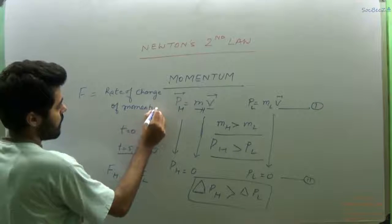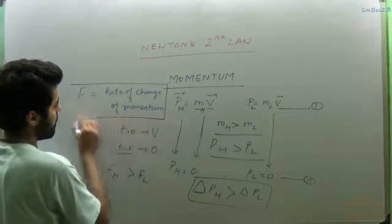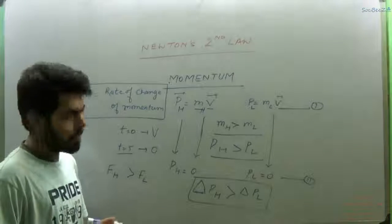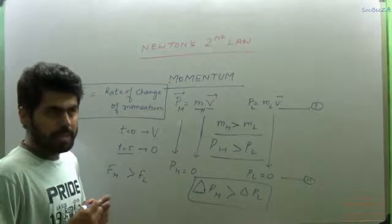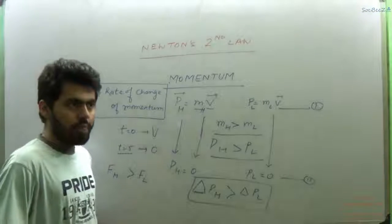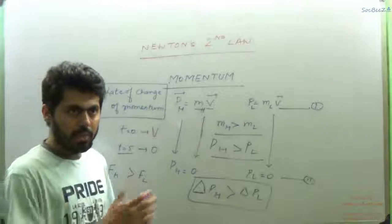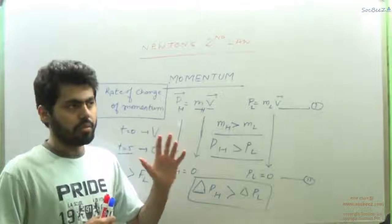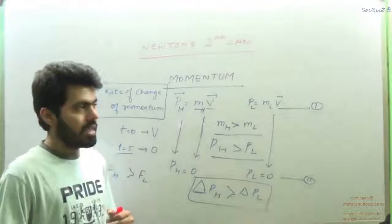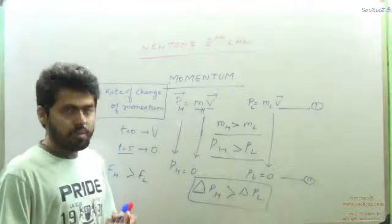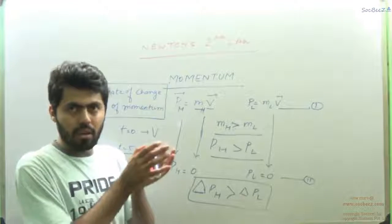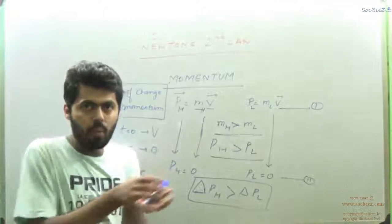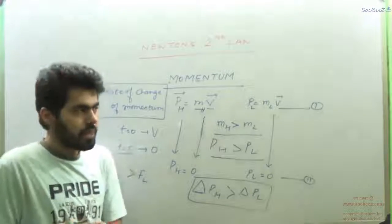Mind it - I am saying rate of change of momentum means per second how much momentum is changing. I will give you another example. In a cricket match, when a fast bowler is bowling, the wicket keeper tries to stand at a larger distance from the batsman than in the case of a spinner. And you will observe that when he catches a ball in his gloves, he tries to trace his hand a bit backwards. Why?